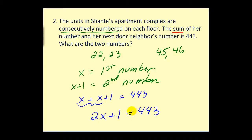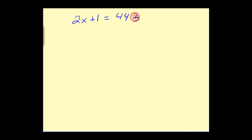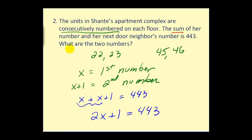Let's take this over to the next screen. Now we have our basic two-step equation. So we will subtract one on both sides, divide by two. We have x is equal to 221. Now be careful. Let's go back and read the question again. What are the numbers?